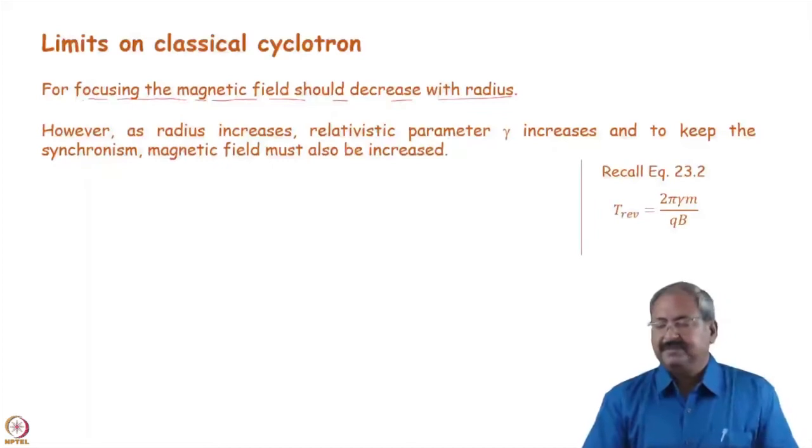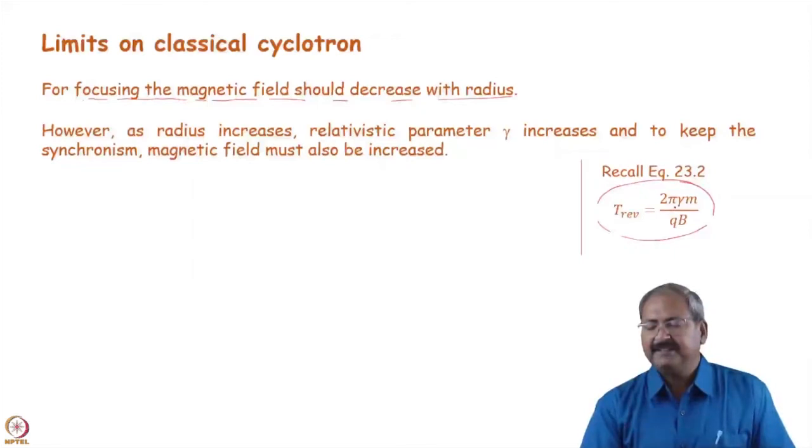However, recall your formula of revolution time. Revolution time increases with increasing gamma. So, if you want to make revolution time constant, gamma by magnetic field, this ratio should remain constant. Means as gamma increases, B should also increase.